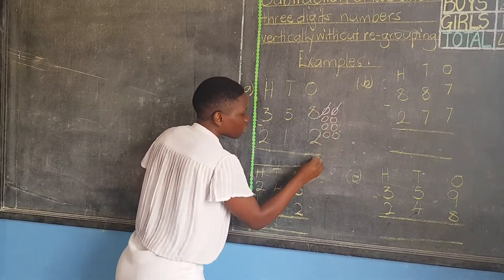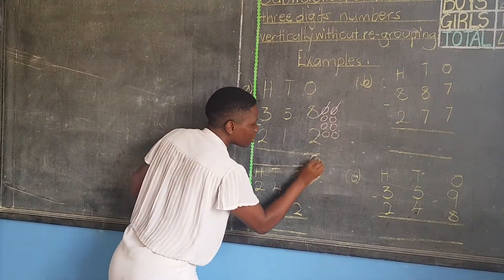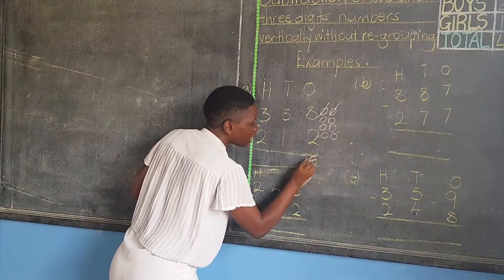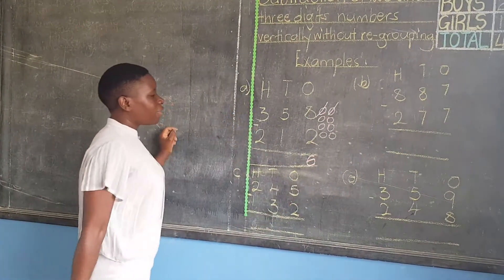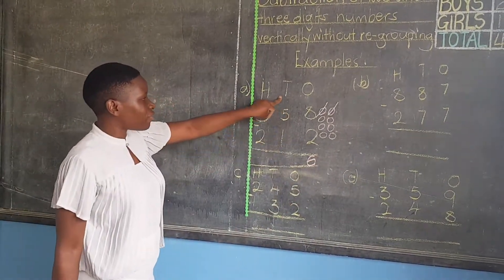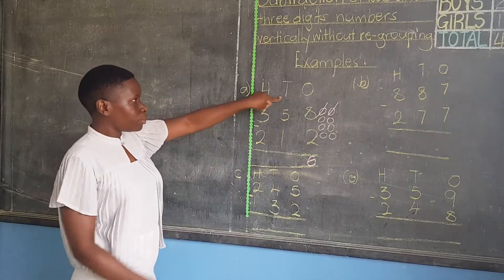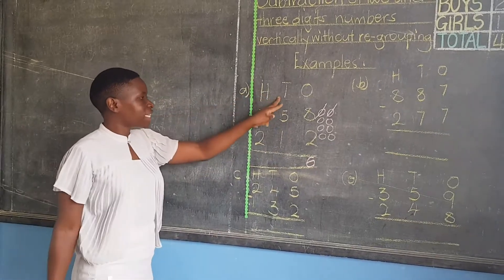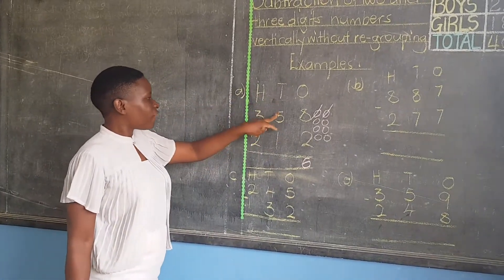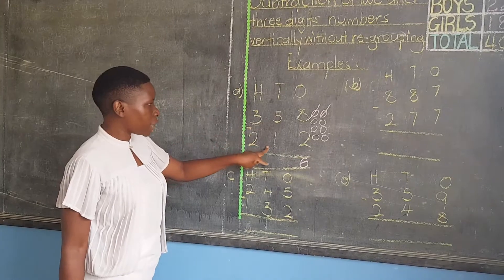Six. So I write six in the same line with the numbers I have subtracted. Then I move on to the next place, which is tens. We subtract vertically, we say five, take away one.